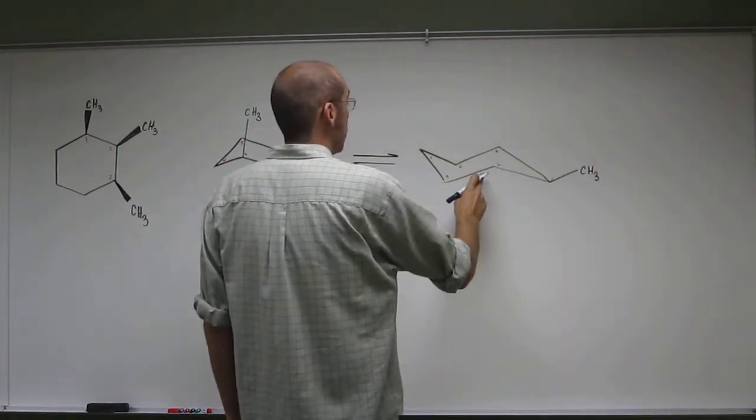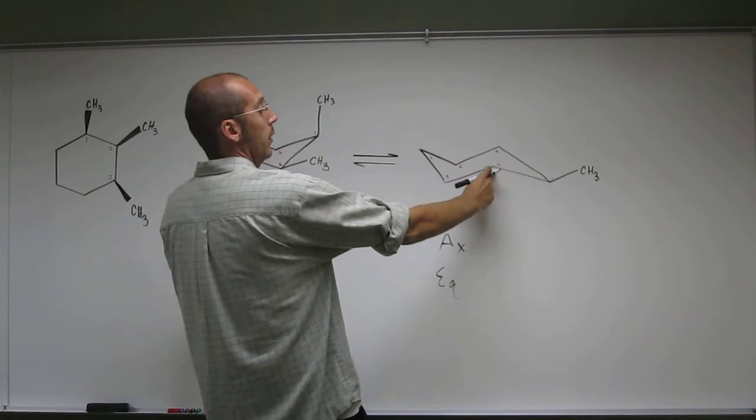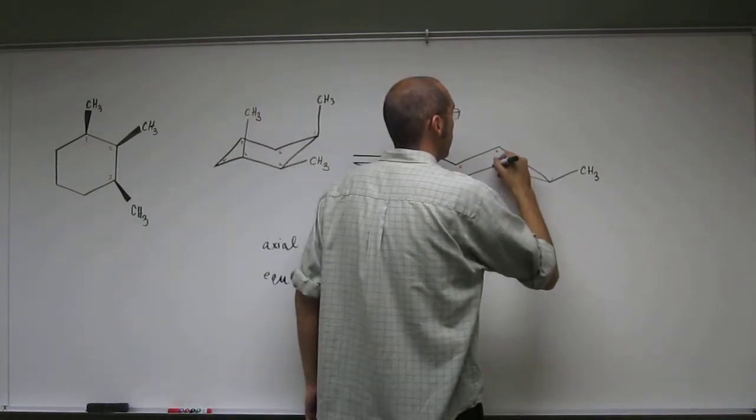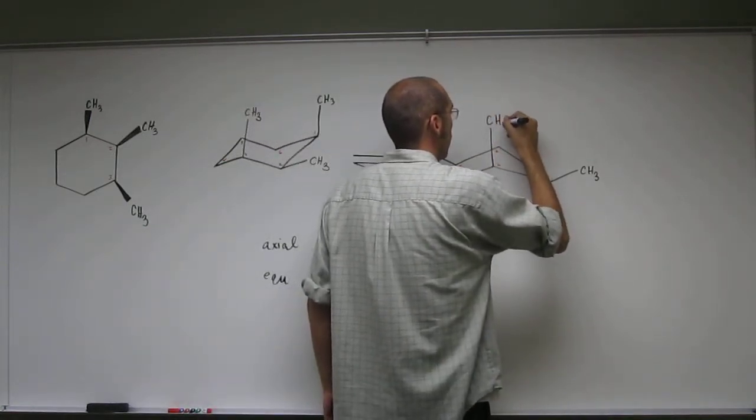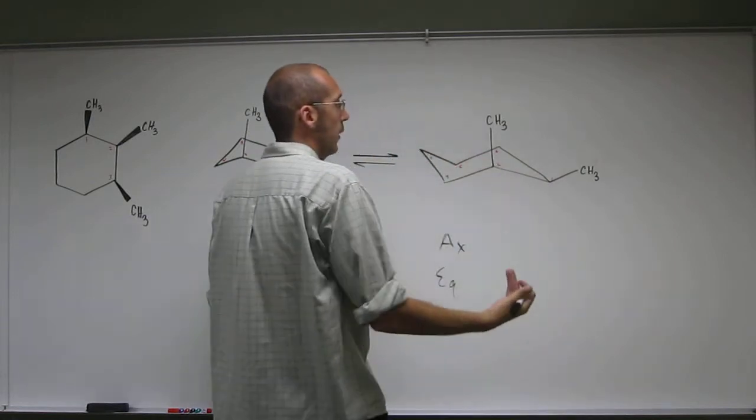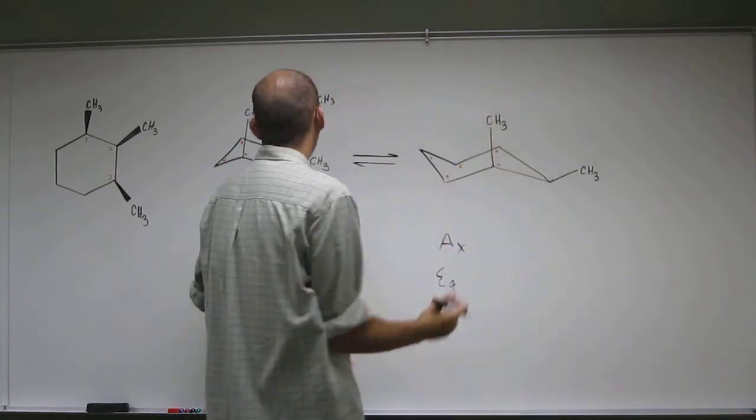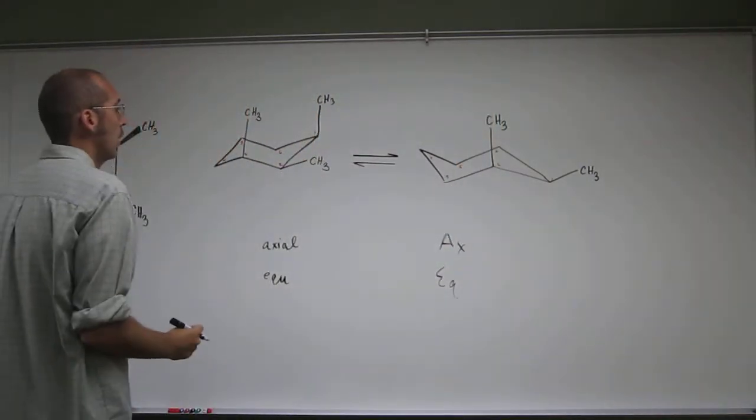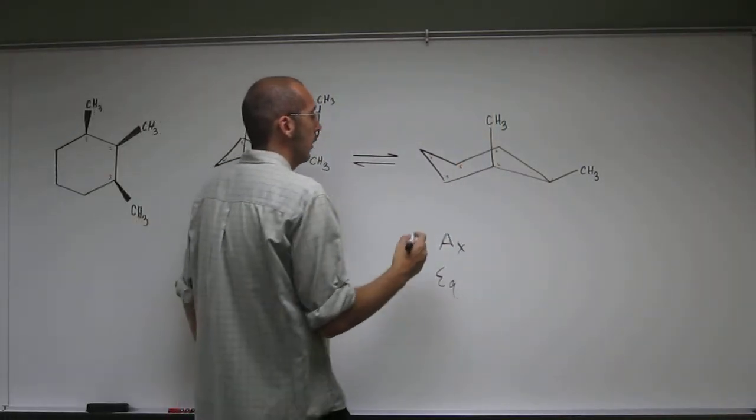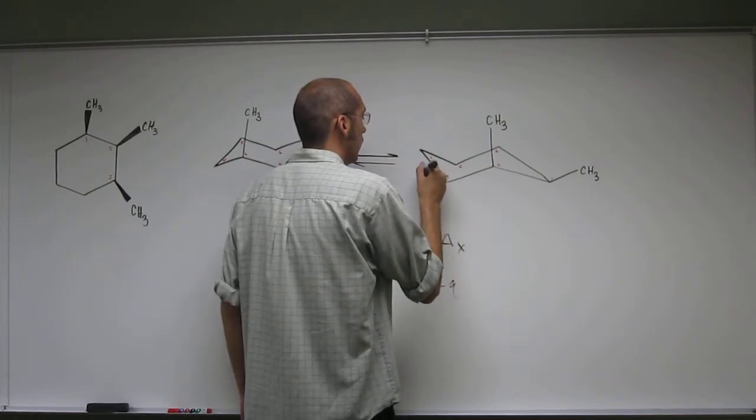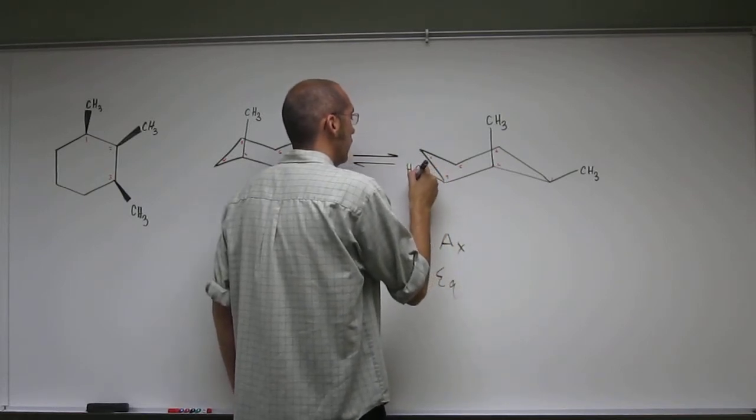So, 1, 2, equatorial over here, so it's axial over here. You don't even need to know that, because this one's pointed up, so the axial is up, and then here, of course, it's going to be equatorial as well.